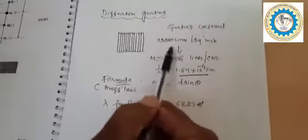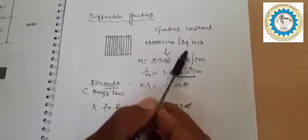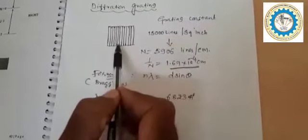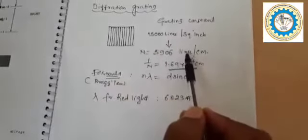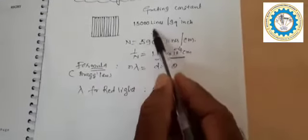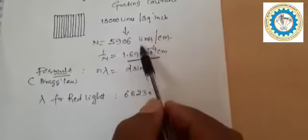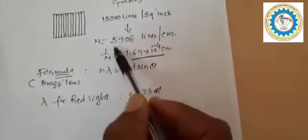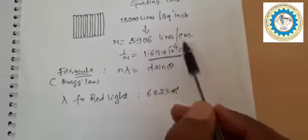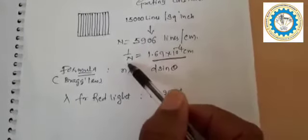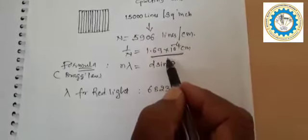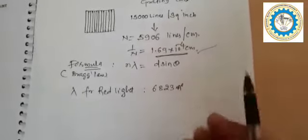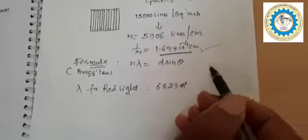This can be achieved using a diffraction grating. A diffraction grating consists of 15,000 lines per square inch. It has a constant called the grating constant. Converting 15,000 lines per square inch gives 5,906 lines per centimeter. Taking 1 upon m gives 1.69 × 10⁻⁴ centimeter, which is the grating constant.